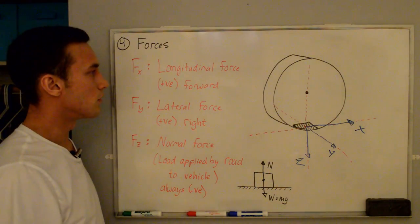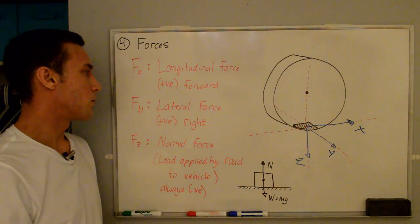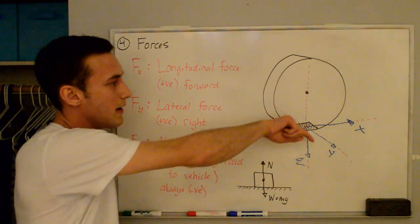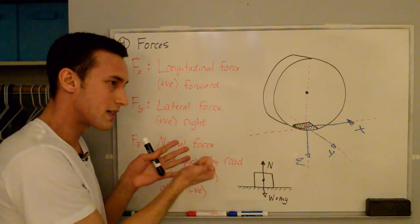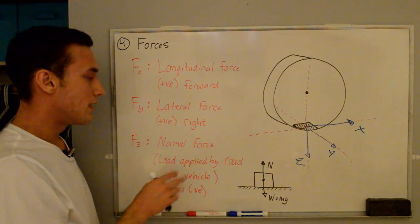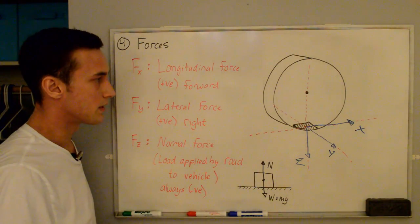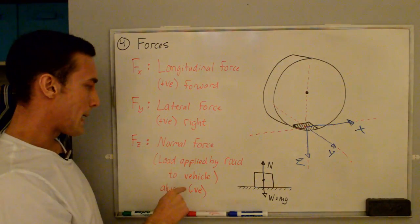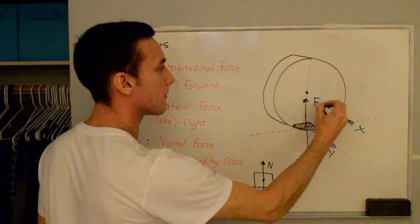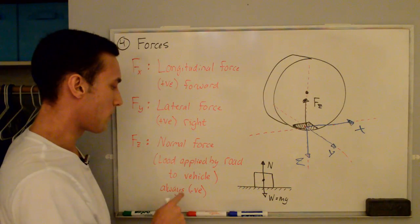F sub X is the longitudinal force and it's positive forward — positive when acting along the positive X direction. F sub Y is the lateral force, and that's what we'll be talking about mostly when discussing tire forces and moments. It's positive out to the right of the tire — so if you're looking behind the tire rolling forward, it's out to the right. The interesting one is the normal force F sub Z, defined as the load applied by the road to the vehicle, and it's always going to be negative because the load acts in the opposite direction of the positive Z axis.